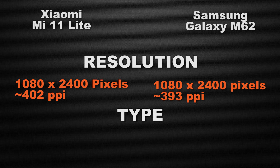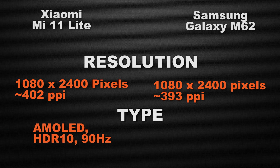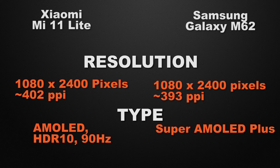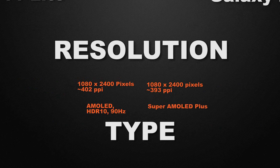For display type, the 11 Lite comes with an AMOLED display with 90Hz refresh rate and HDR10 support, whereas the M62 has a Super AMOLED Plus display. So the winner here is the 11 Lite because its HDR10 display produces deeper blacks and more vivid colors.